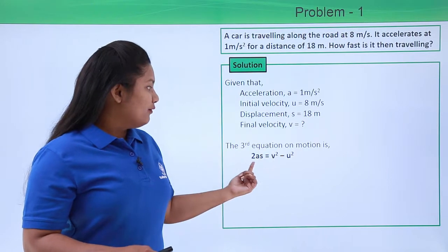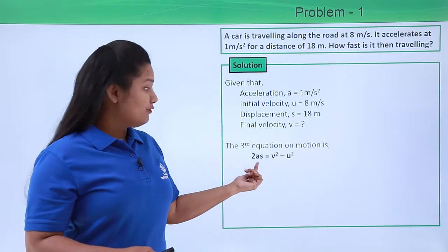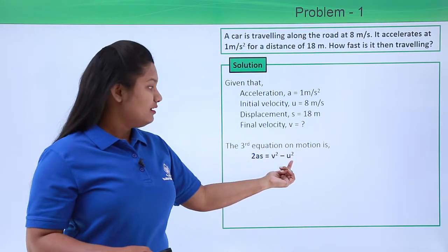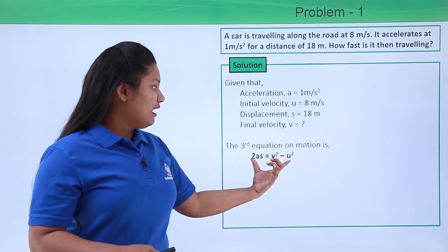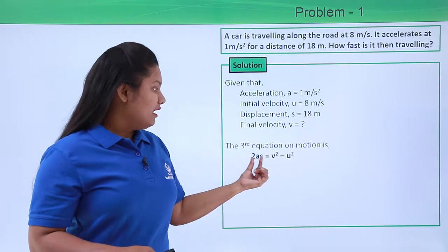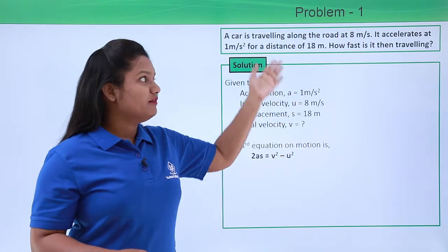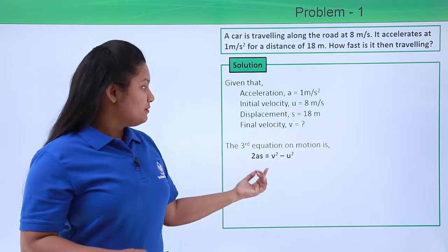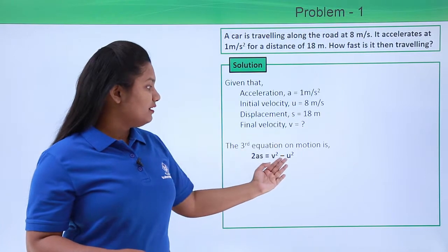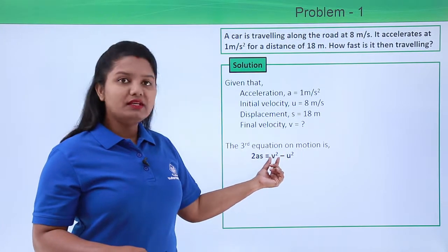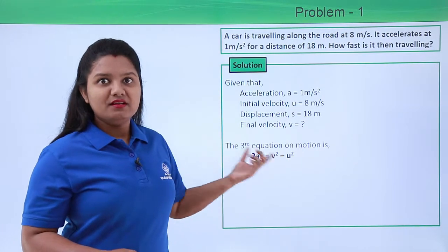Here there are four variables or four unknown quantities, but out of which we have to find v, and all the three quantities we already have the values which are given in the question. So on substituting all these three values here, we will be able to find what is the value of v. So let us do that.